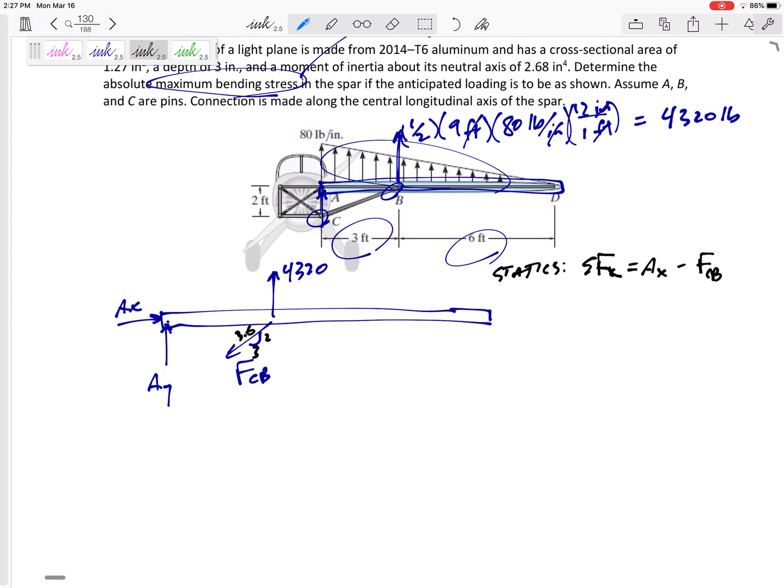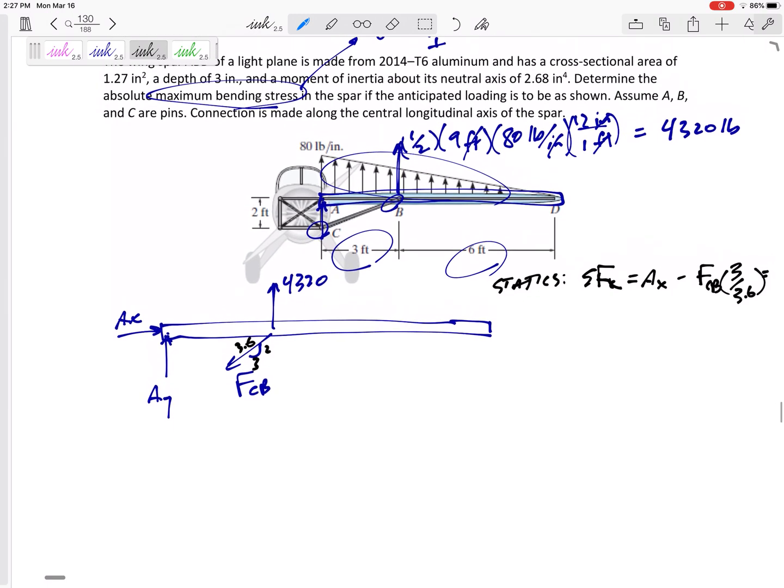From statics, we can sum the forces in x: Ax minus the 3/3.6 component equals zero. I don't think that's going to help us, so I probably should have just started with sum of the forces in the y direction: Ay plus 4320 minus F times the 2 over 3.6 component equals zero.